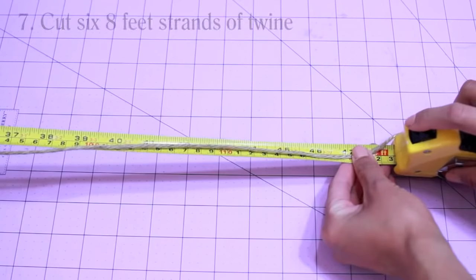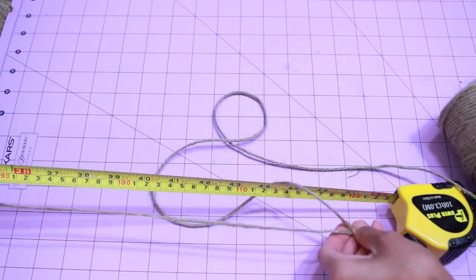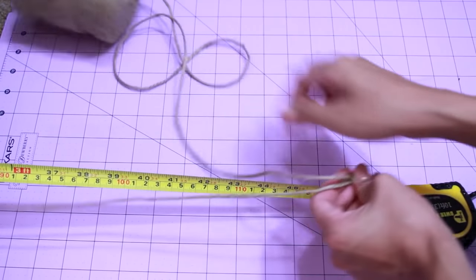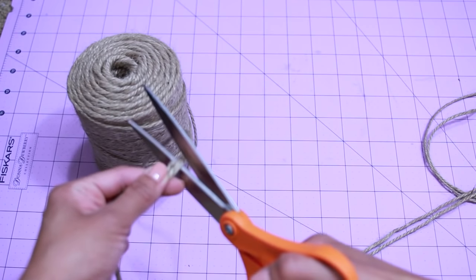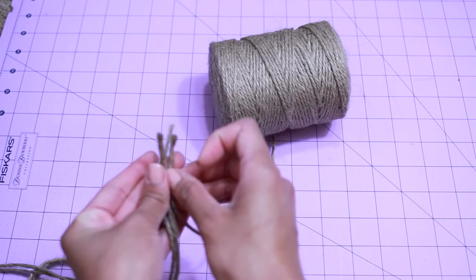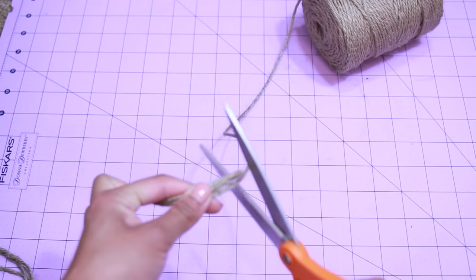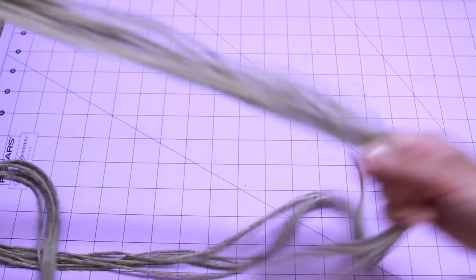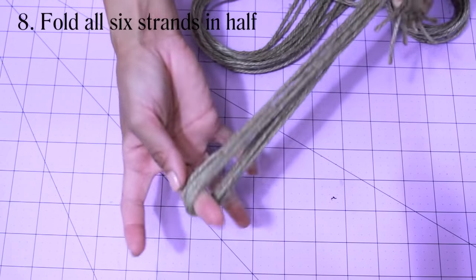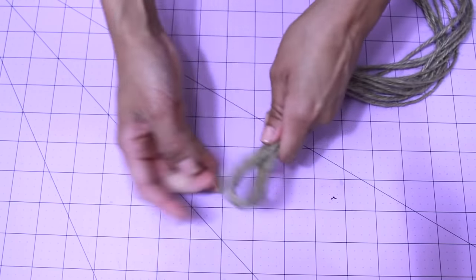Next we're going to be working on the braided ropes where your hats will be hanging. So you'll need to cut 6 8-feet strands of twine and you're going to fold them in half. Once you've gathered and folded all 6 strands in half, we're going to tie a knot an inch down from the loop.